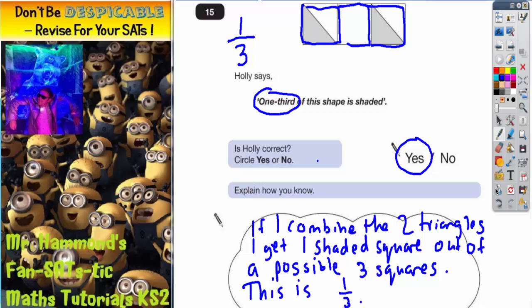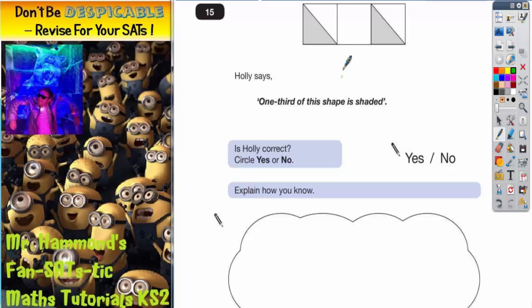Another way you could do it is instead of thinking about squares you can actually think about triangles. Well this third square is split into two triangles. So let's just keep everything the same, split the middle square into two triangles as well.